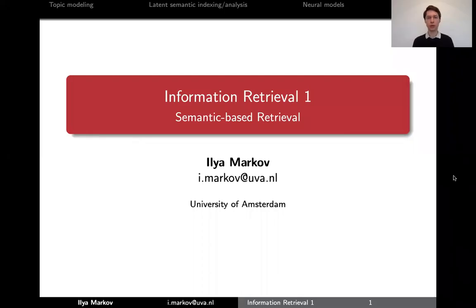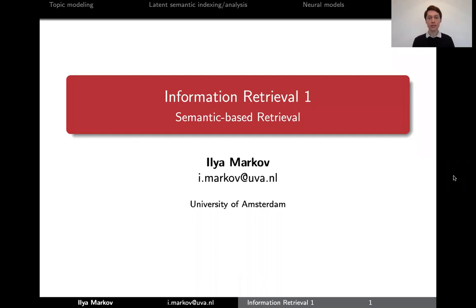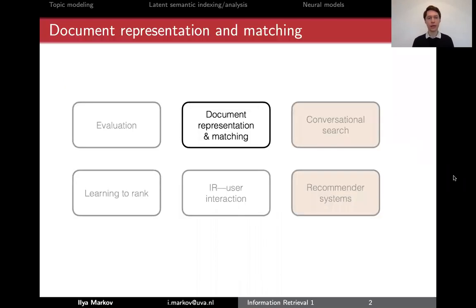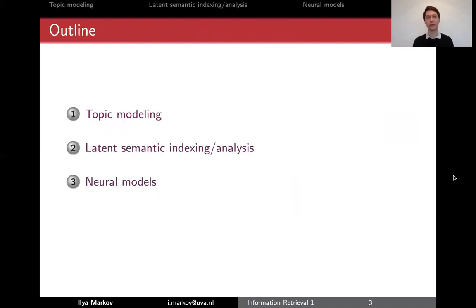Let's continue talking about document representation and matching. In the previous videos I introduced two standard representations, one based on vectors and one based on distributions. We talked about how to create those representations, how to match them, and how to rank documents based on that — basically you get the matching score and then you rank documents accordingly. Now let's take a look at a set of different techniques.